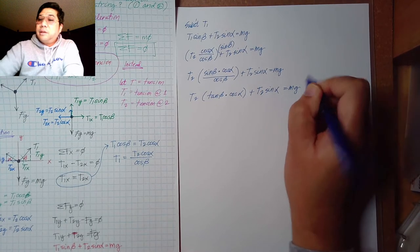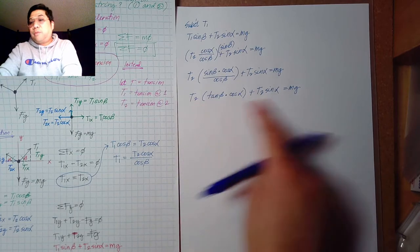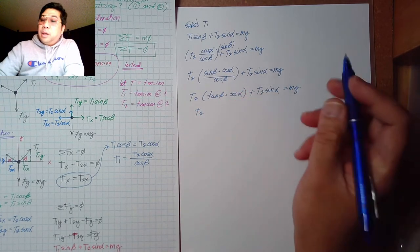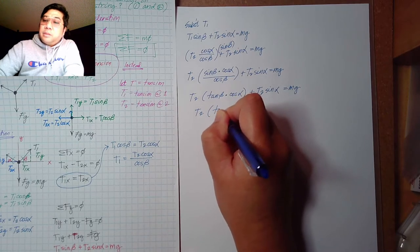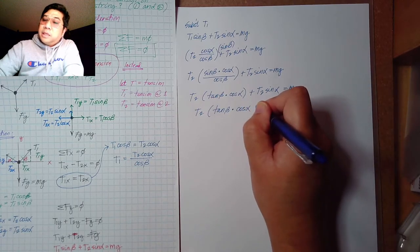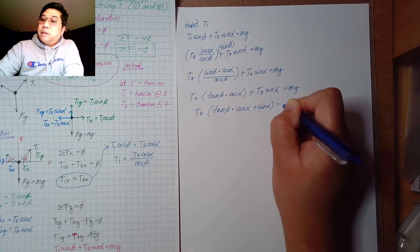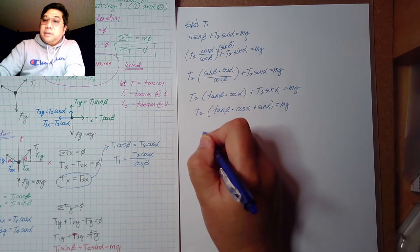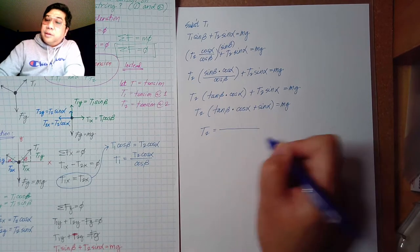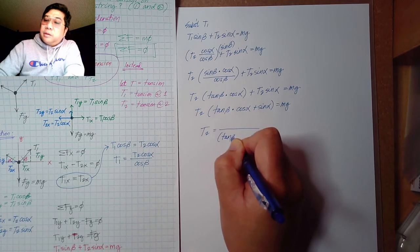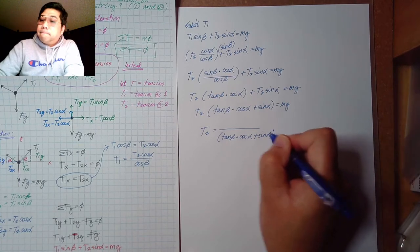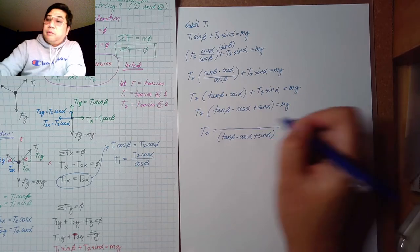Dividing both sides by (tangent beta cosine alpha plus sine alpha), we get: T2 equals mg divided by (tangent beta times cosine alpha plus sine alpha). That is the value of T2 in terms of mass, g, and the given angles.